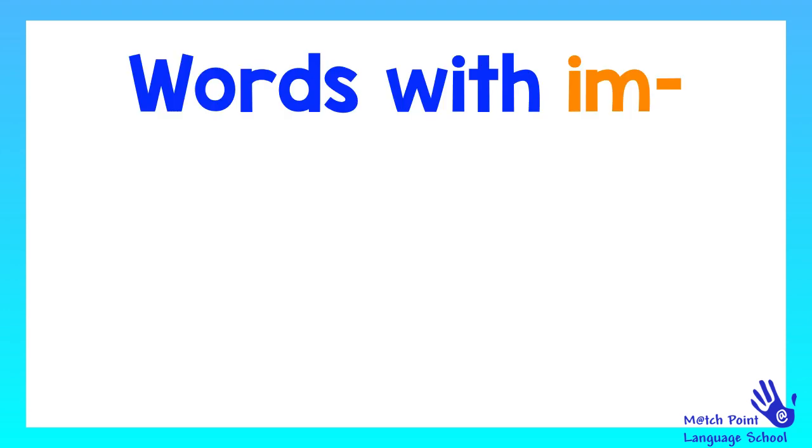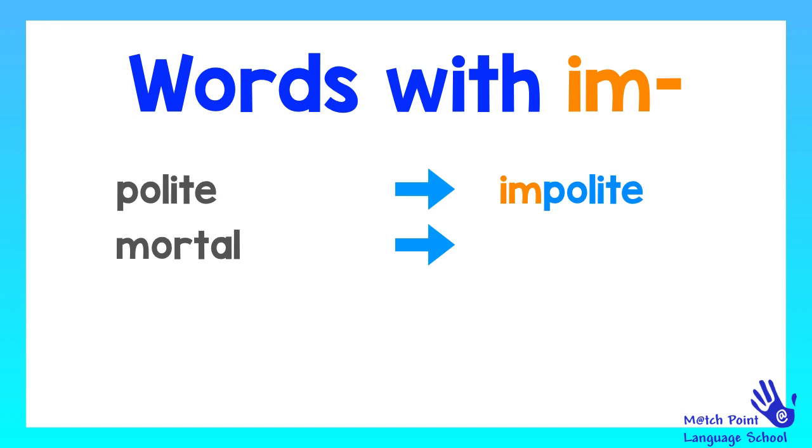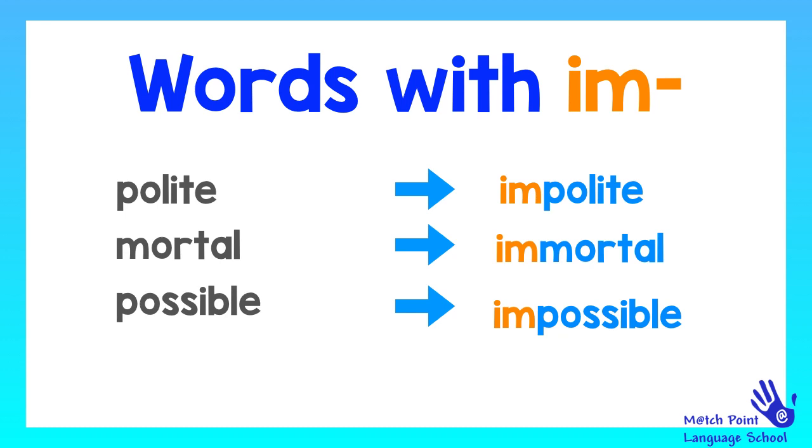Now we're going to see words that use the prefix im. Usually these words begin with a B or a P. Also, if they start with an M, it's possible to use this prefix. Polite becomes impolite. Mortal becomes immortal. Possible becomes impossible. And mobile becomes immobile.